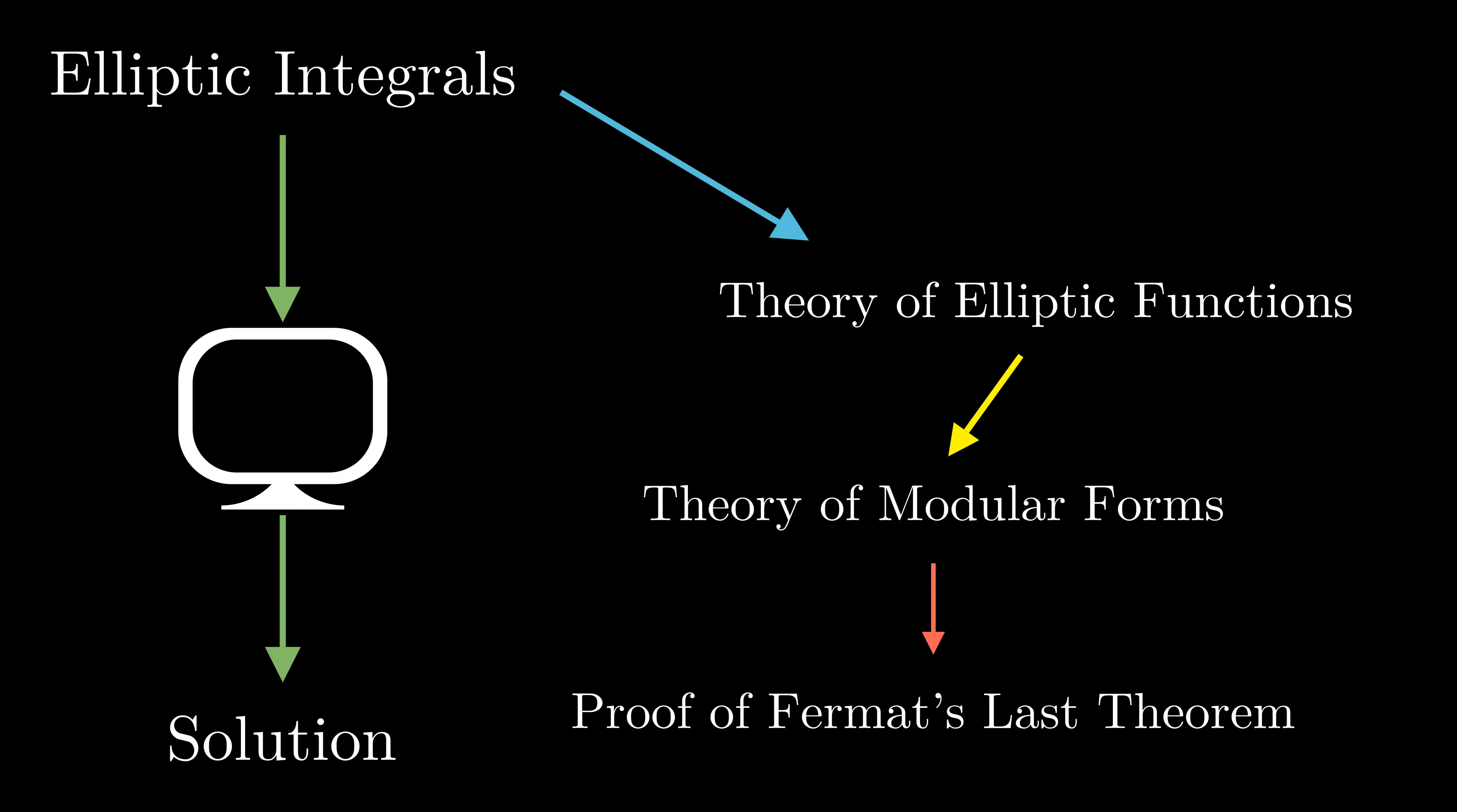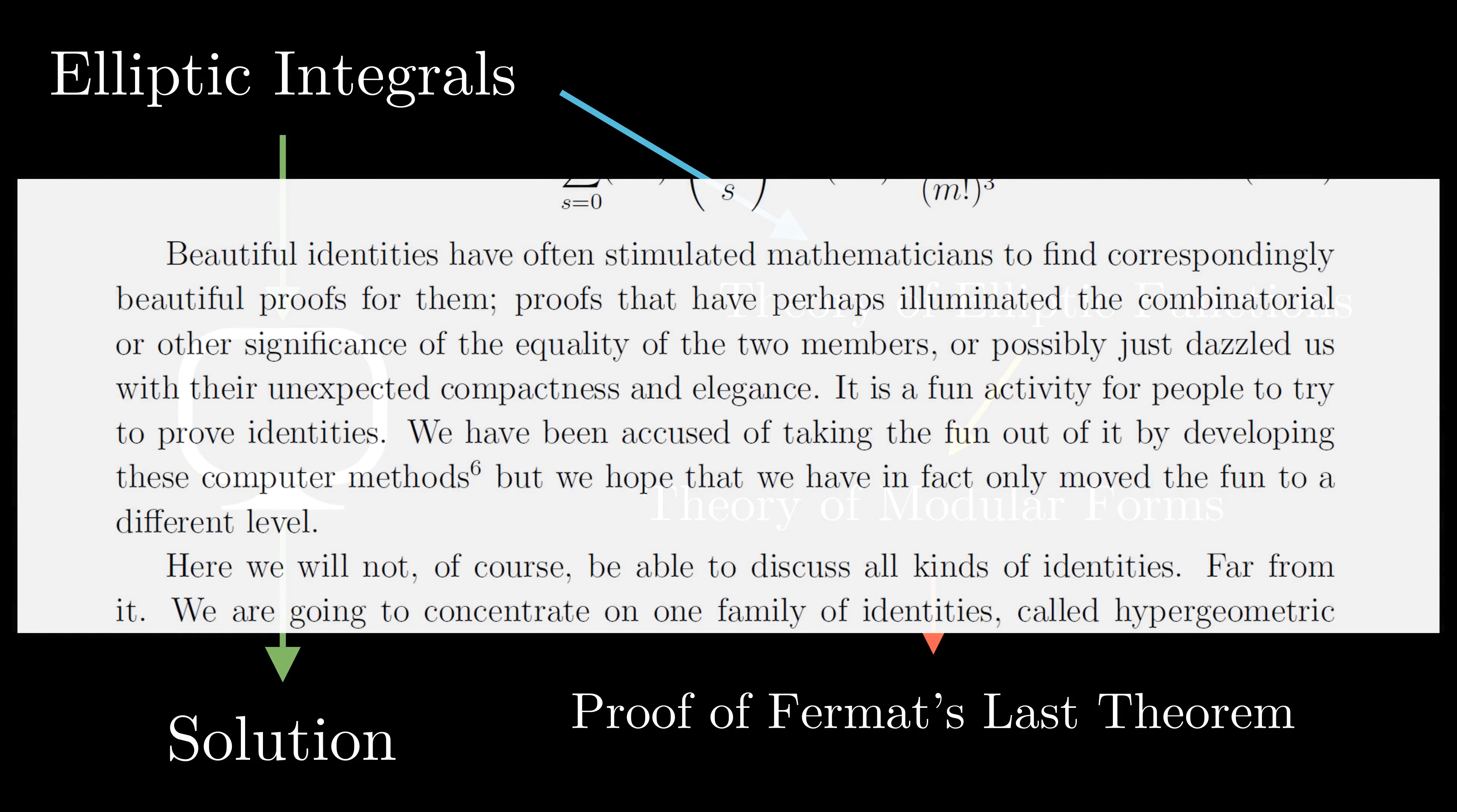But there is still an immense value in studying individual identities. Just because the search and verification of many of these identities is now a routine computer task, doesn't mean that there isn't anything valuable to be learned. The manual search for some of these identities and answers has led to the development of entire fields of math that would probably have gone undiscovered had these computer methods existed. These computer shortcuts shouldn't take the fun out of discovering and proving identities. As the mathematicians who discover these techniques write, it merely moves the fun to a different level. I'm inclined to agree. Now let's get started.